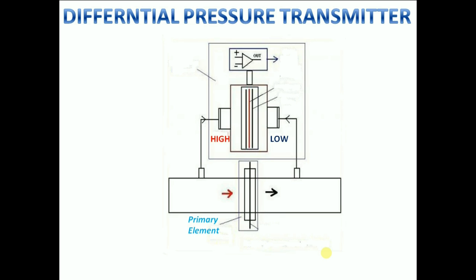There are many different types of primary element, the most common being the orifice plate, venturi, flow nozzle, and pitot tube. The secondary element of the flow meter is the differential pressure transmitter.